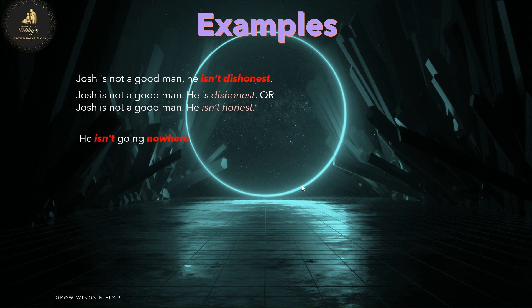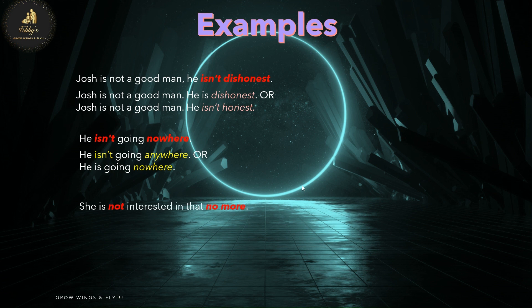'He isn't going nowhere.' We can correct this in the following manner: 'He isn't going anywhere.' Or: 'He is going nowhere.' Another example: 'She is not interested in that no more.' We can correct this by saying: 'She is not interested in that anymore.' Or: 'She is interested in that no more.'